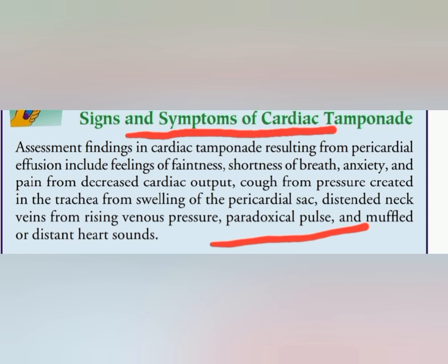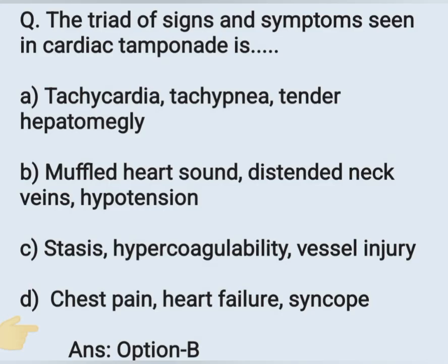In cardiac tamponade, the patient may experience faintness, shortness of breath, anxiety, and pain from decreased cardiac output, distended neck veins from rising venous pressure, paradoxical pulse, and muffled or distant heart sounds. From the options, we select option B: muffled heart sounds, distended neck veins, and hypotension.